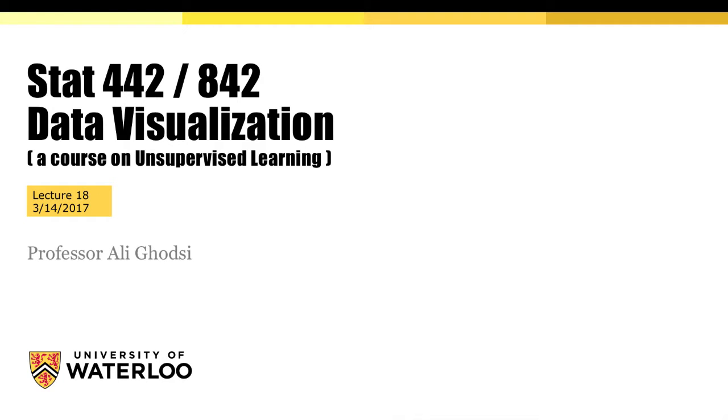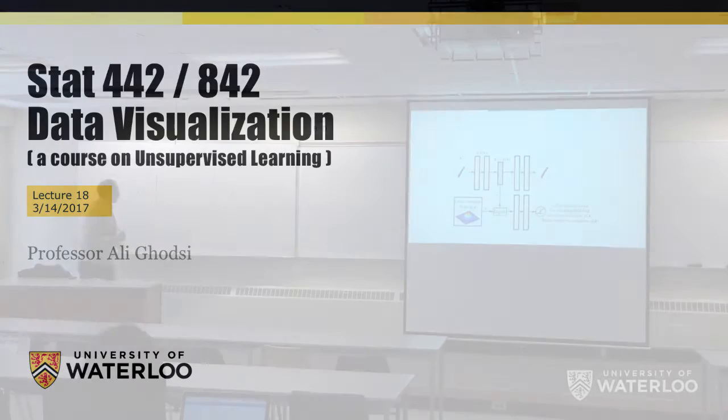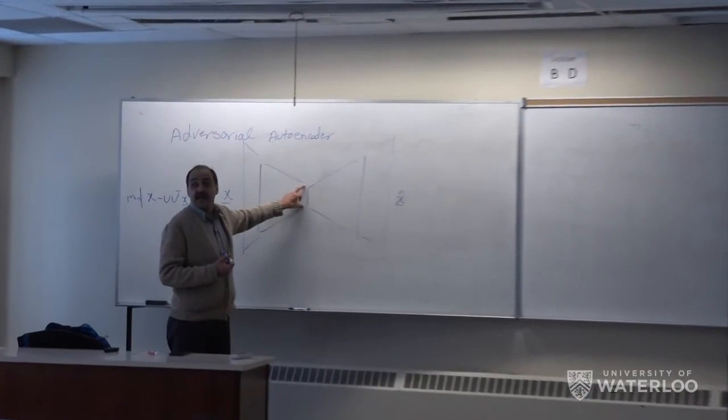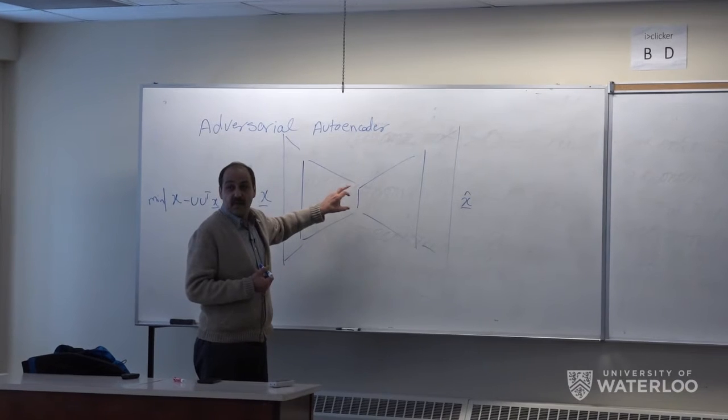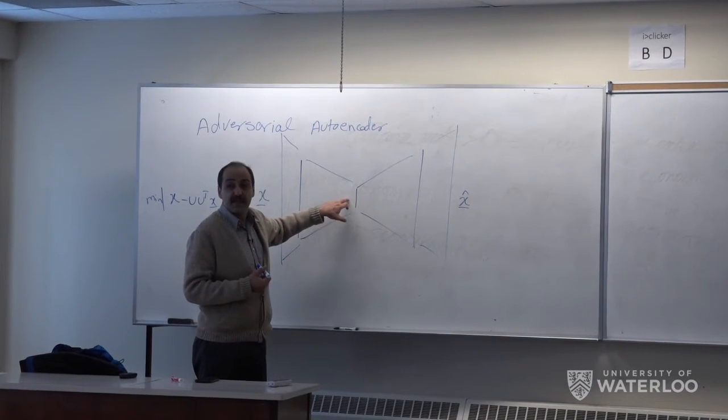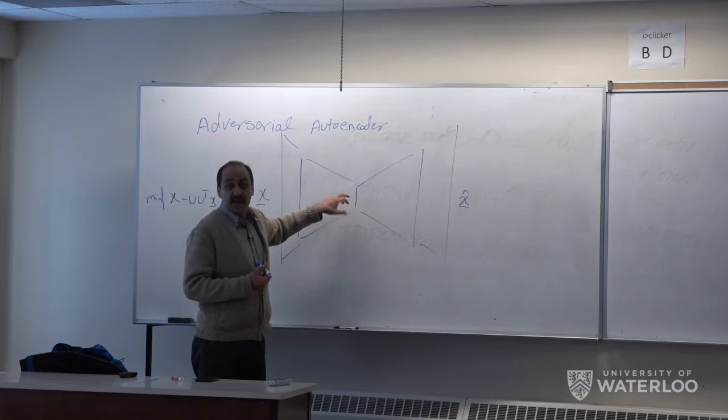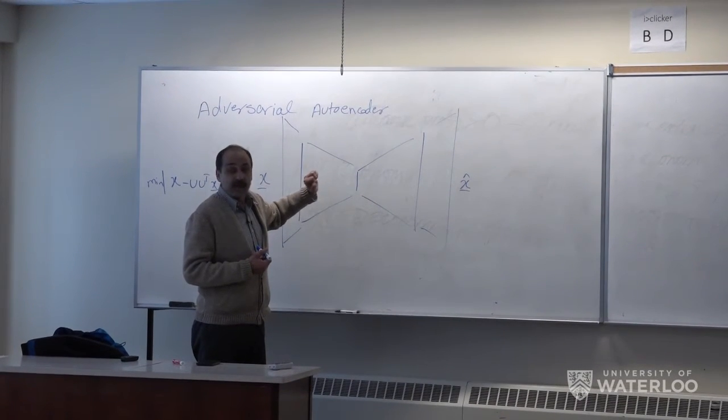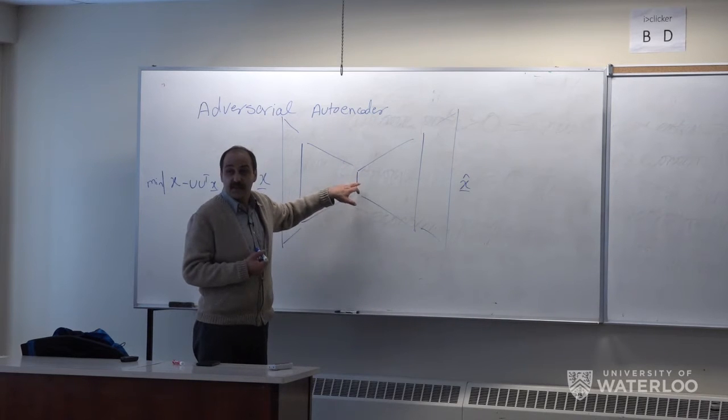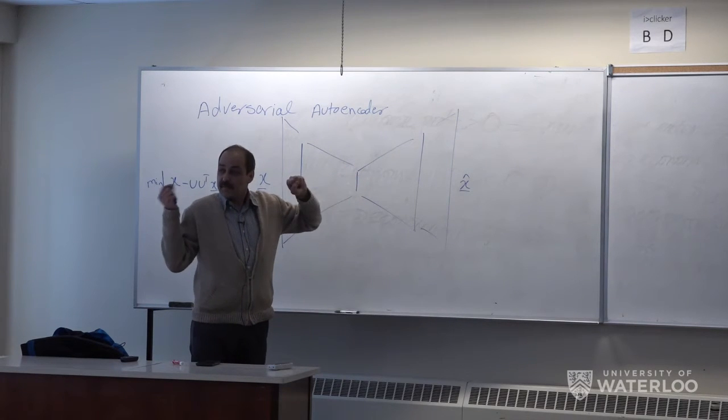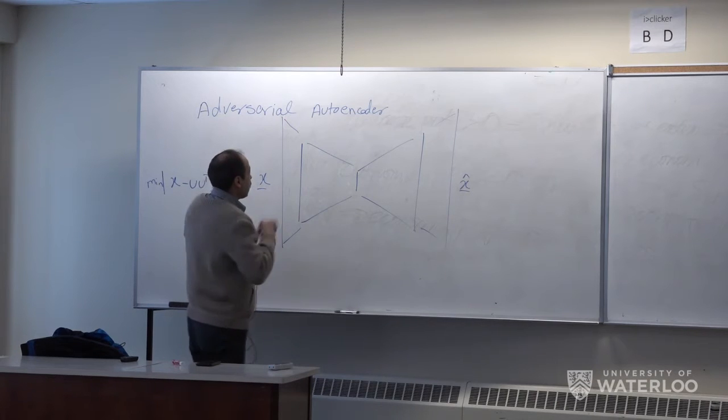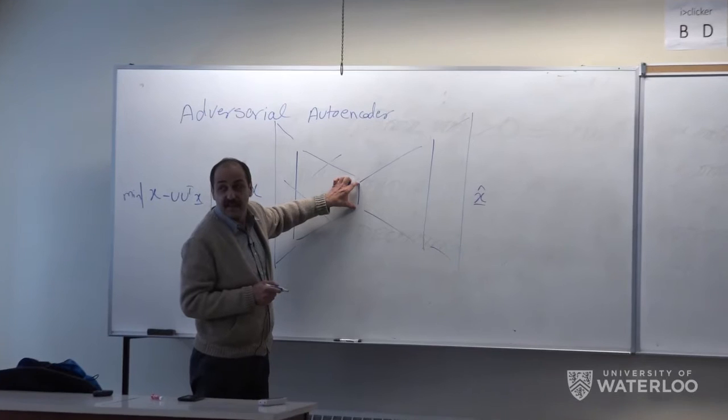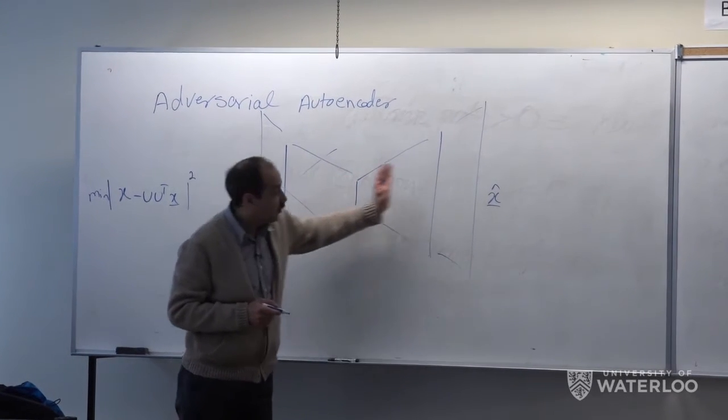The model which is called variational autoencoder. In variational autoencoder we would like this hidden space to have certain distribution. We want the distribution of the hidden space to be Gaussian. And why this is a good thing to have a Gaussian distribution here, if I'm sure that the distribution of this hidden space is Gaussian, then I can sample from a Gaussian, forget this part of the model, sample from a Gaussian and feed this network, this part of the network.